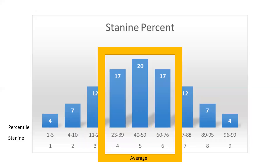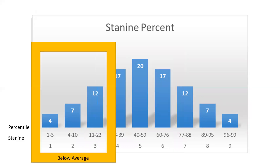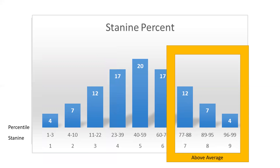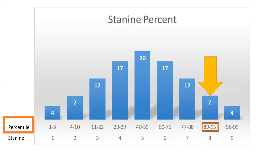A stanine of 4, 5, or 6 is considered average, and 54% of students will receive an average score in this range. A stanine of 1, 2, or 3 is considered below average — 23% of students will score below average on a subtest. A stanine of 7, 8, or 9 is considered above average performance, and 23% of students will score above average. Our sample student scored a percentile of 93% on verbal reasoning when compared to the national norm. A percentile of 93 lines up with a stanine of 8 — 7% of students score a stanine of 8 on a given subtest — which is above average.